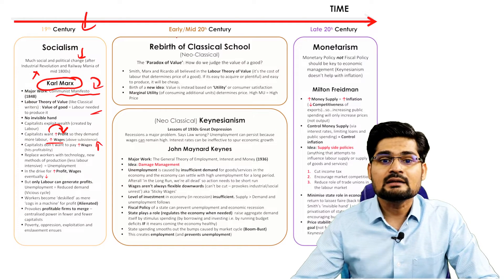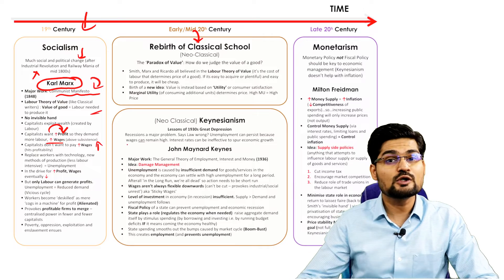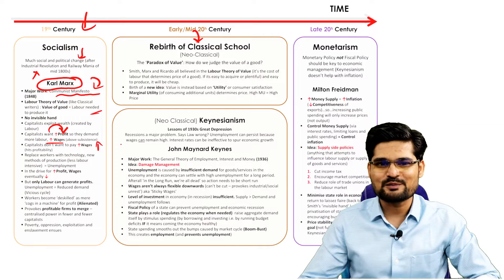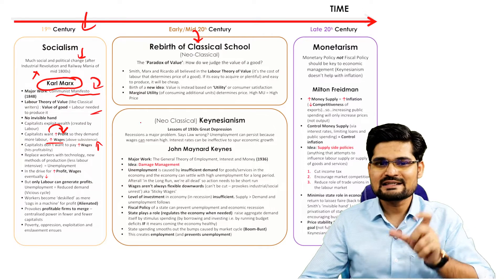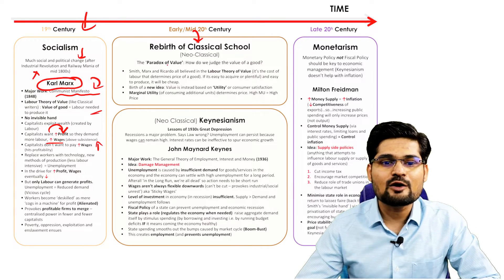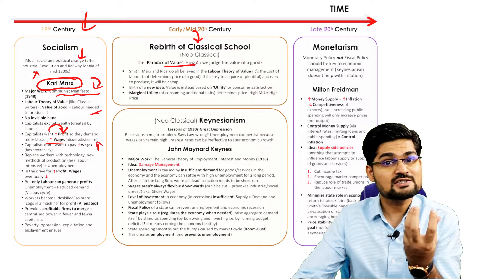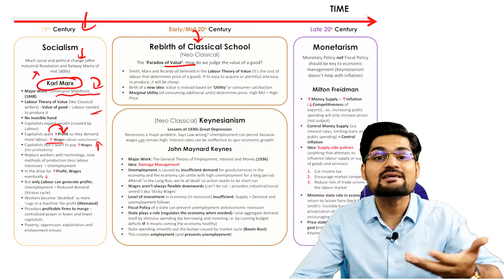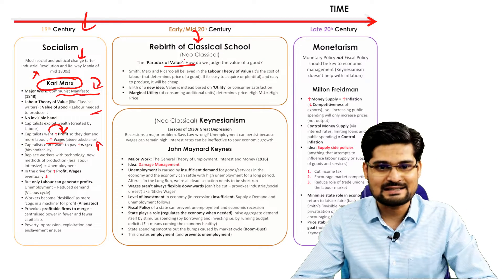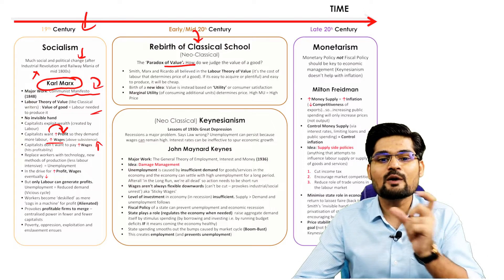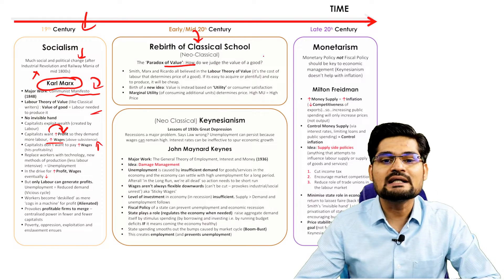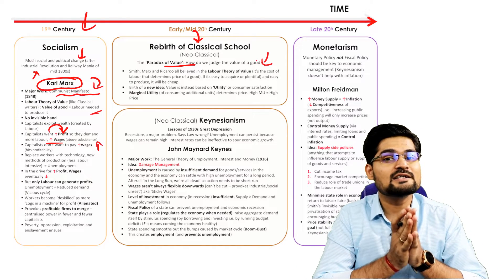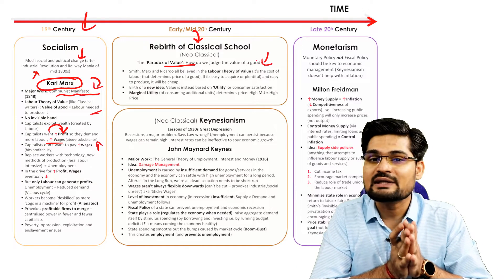Then there is the rebirth of the classical school called neoclassical economics. Here the paradox of value — how to judge the value of a good — comes back into the picture from classical economics. You will observe the utilitarian theories emerging here, along with the theory of marginal utility and others.